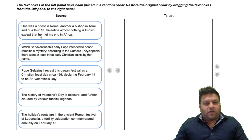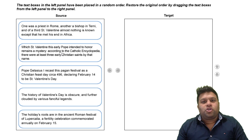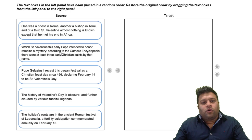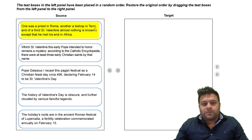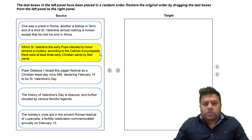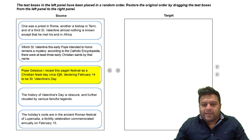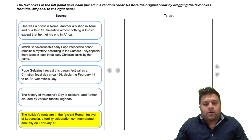I hope you tried it yourself. Let's discuss it now. If you got the correct answer, write it in the comment section so I know how many of you are watching these videos. The sentences are: 'one was a priest in Rome, another was a bishop in Tourney, and almost nothing is known except that the third met his end in Africa'; 'with St. Valentine, which early Pope intended to honor remains a mystery'; 'according to Catholic encyclopedia, there were at least three early Christian saints by that name'; 'Pope Gelasius I recast this pagan festival as a Christian feast day circa 496, declaring February 14 to be St. Valentine's Day'; 'the history of St. Valentine's Day is obscure and further clouded by various fanciful legends'; 'the holiday's roots are in the ancient Roman festival of Lupercalia, a fertility celebration commemorated annually on February 15.'